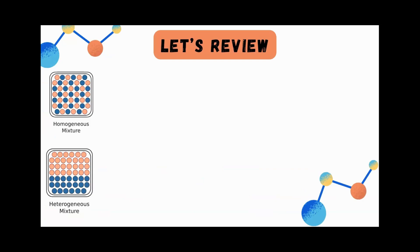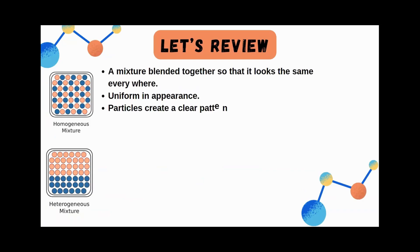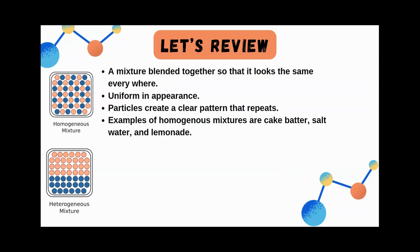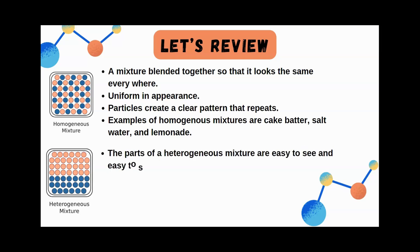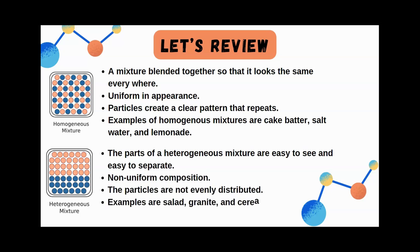To review: homogeneous mixtures are blended together, uniform in appearance, and create a clear repeating pattern. Examples are cake batter, saltwater, and lemonade. Heterogeneous mixtures are easy to see and separate, non-uniform in composition, with unevenly distributed particles. Examples are salad, granite, and cereal.